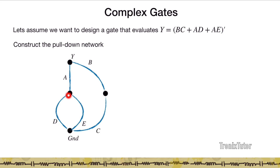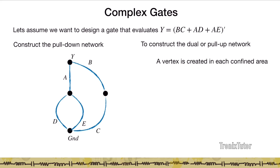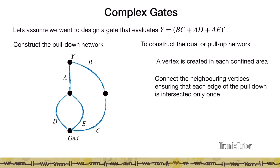I have a path A-D, a path A-E, and a path B-C, all of which when true will pull Y to ground. To construct the dual pull-up network, we borrow from graph theory. Looking at the pull-down network, there are confined areas — we create a vertex in each confined area and connect neighboring vertices, ensuring each edge of the pull-down is intersected only once.